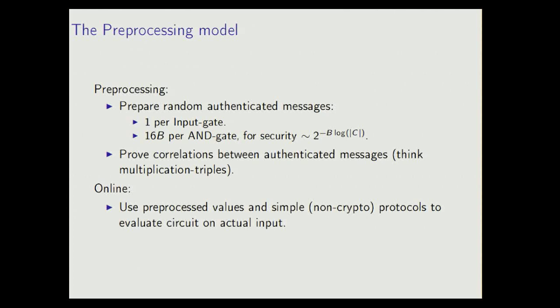In the online phase, then, we do something similar to the other talks that have been here. We use these preprocessed values, along with some very simple protocols, in order to evaluate the circuit on the actual input. And the important thing here is that we don't really use any crypto primitives in the online phase, so the online phase is super fast. Essentially, something like 10% of the time is going to be in the online phase, even less, actually. So since the preprocessing phase is where we do the most heavy lifting, I'm going to focus on this for this talk, and I'm going to focus just on how we get these random authentications.